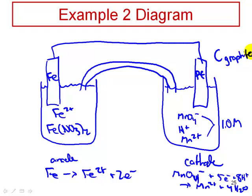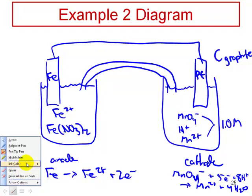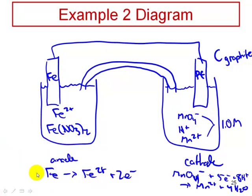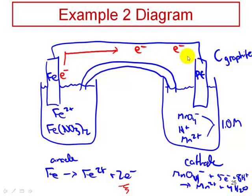In this cell, electrons travel from left to right — they are produced at the anode by the oxidation of iron and flow through the wire to the cathode, where they reduce permanganate to Mn²⁺.